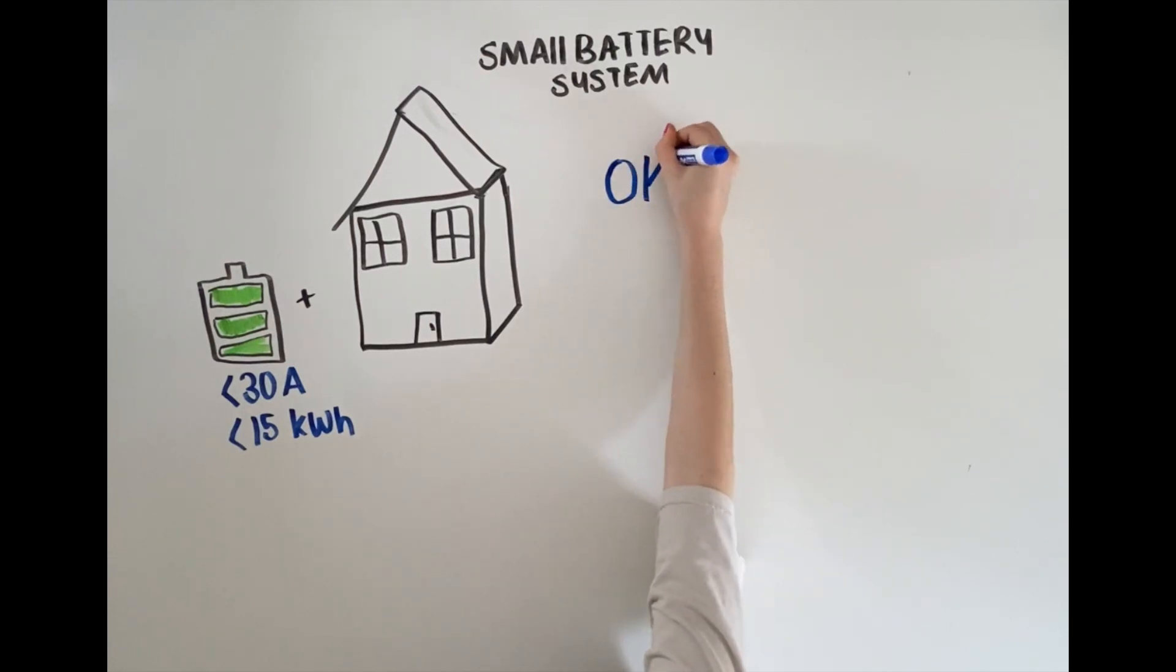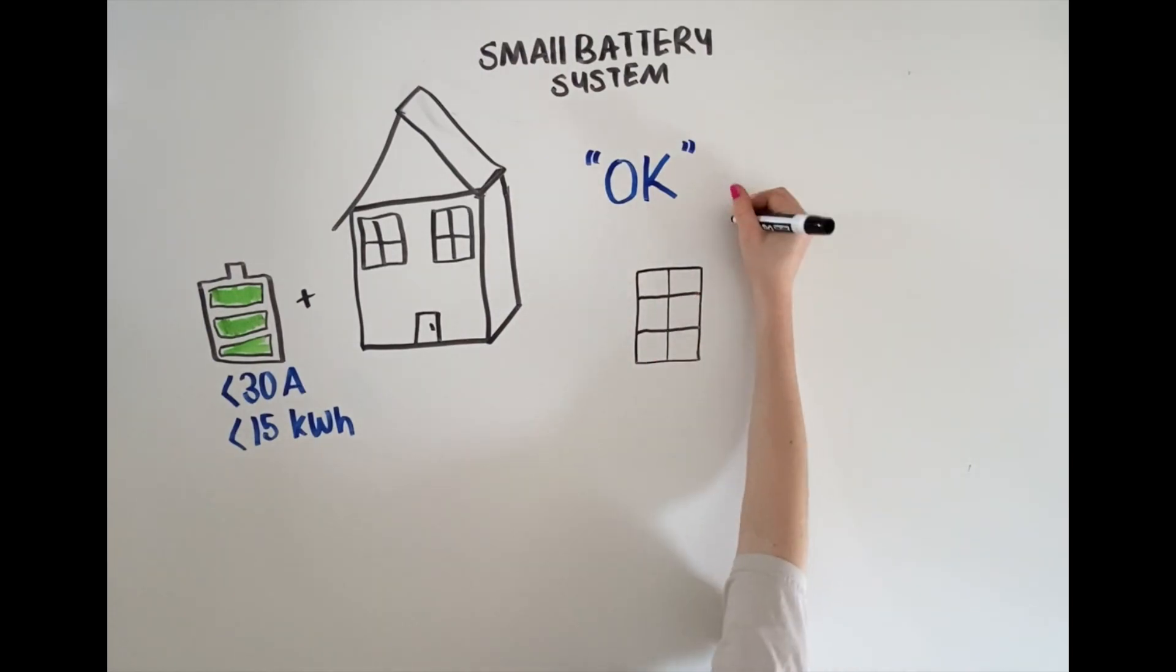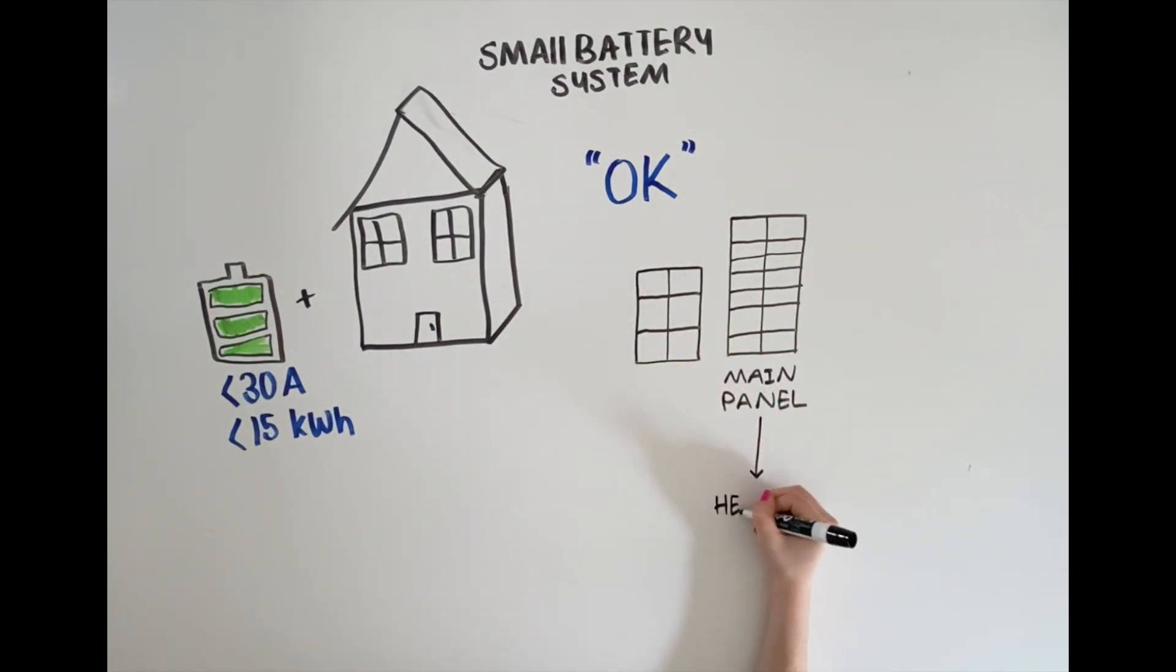The solution that installers have come up with, which is okay for homeowners, is to pull out what's called a protected loads panel. So you end up with two electrical panels in the home: a main electrical panel, or main distribution panel, which has these heavier loads in it,